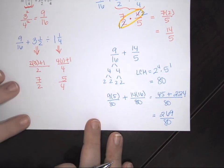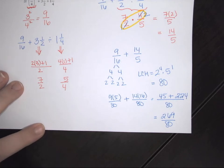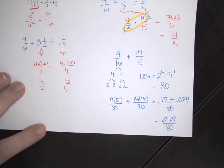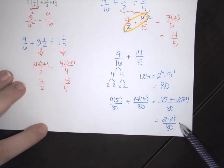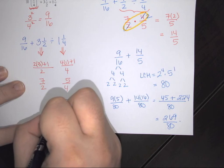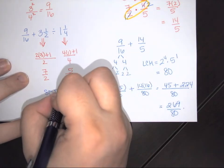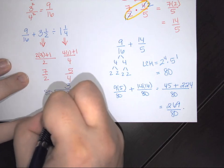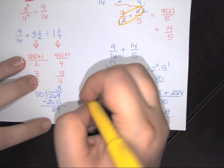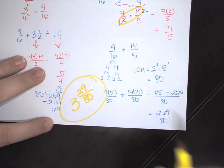In some instances you're asked to leave it as an improper fraction — in which case you check if it reduces. Otherwise, you're asked to change it to mixed number form using long division. Put 269 inside and 80 on the outside. How many times does 80 go into 269? It's 3. Subtract away 240, which leaves 29. 80 does not go into 29. Therefore, your answer is 3 and 29 over 80, and that is your end result.